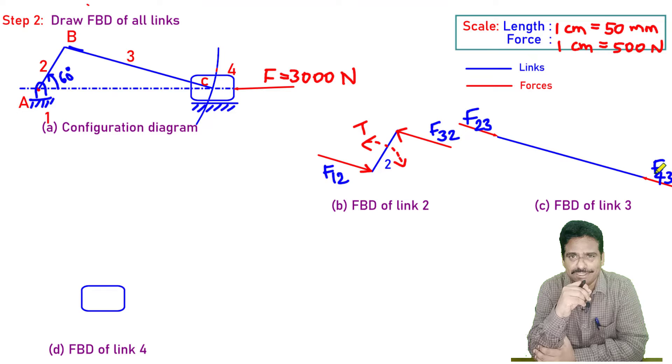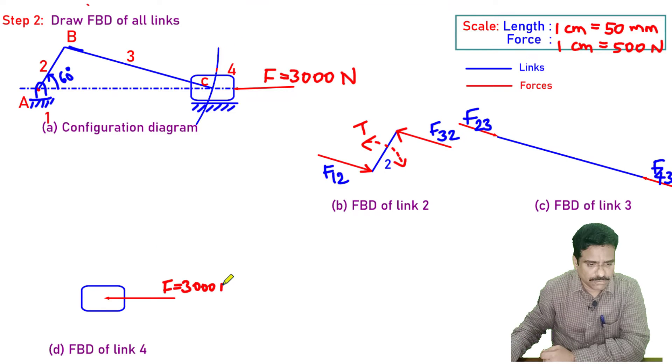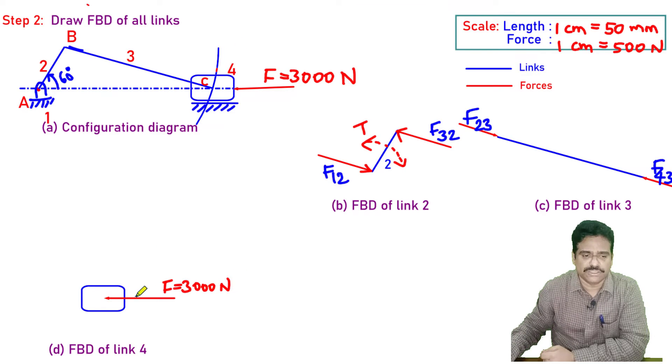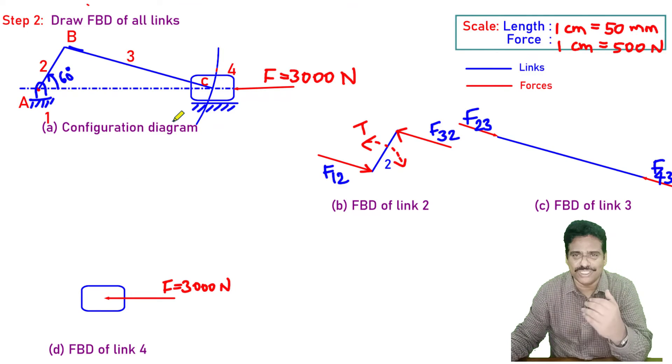Shall we move on to the last one? Slider. What are the forces? Yes, we have applied force, 3000 Newton. Then link 1 will exert force on link 4. Link 1 is nothing but a fixed link.